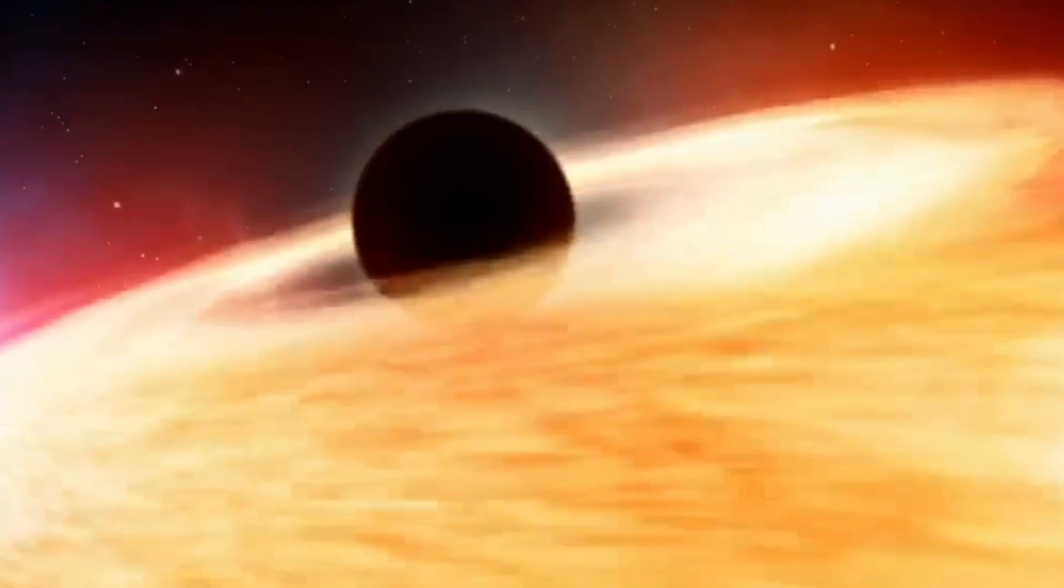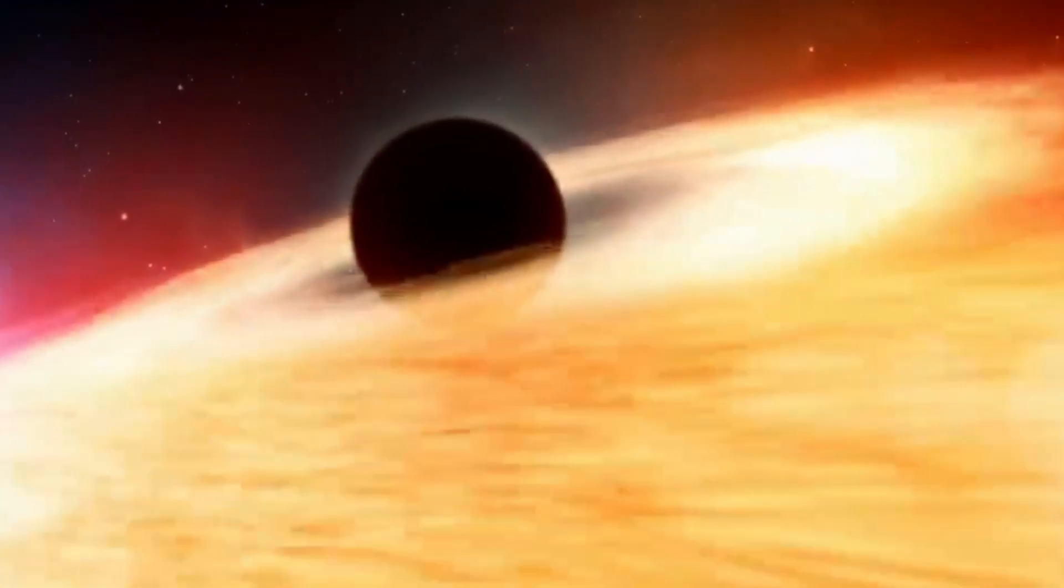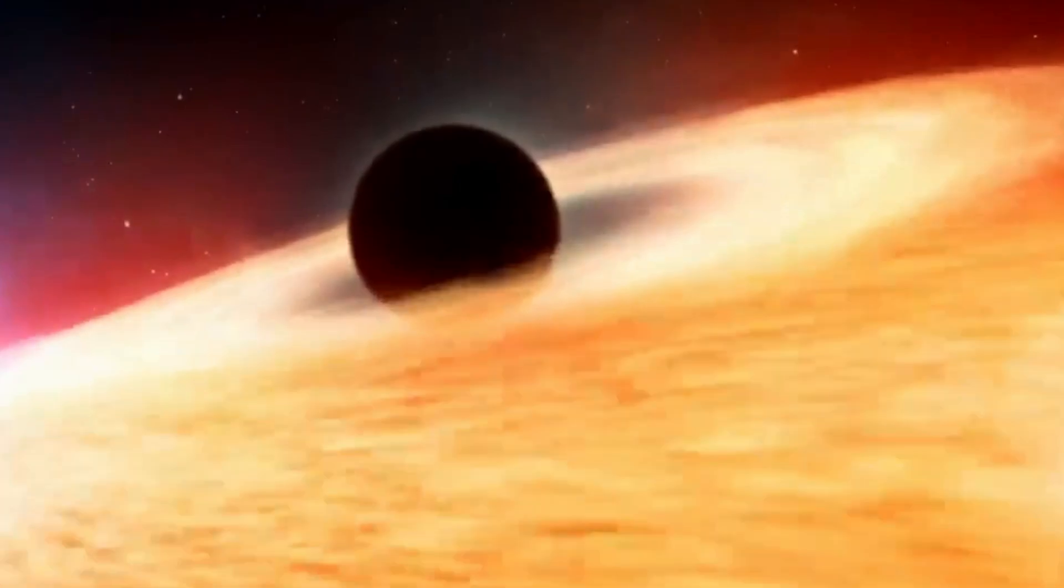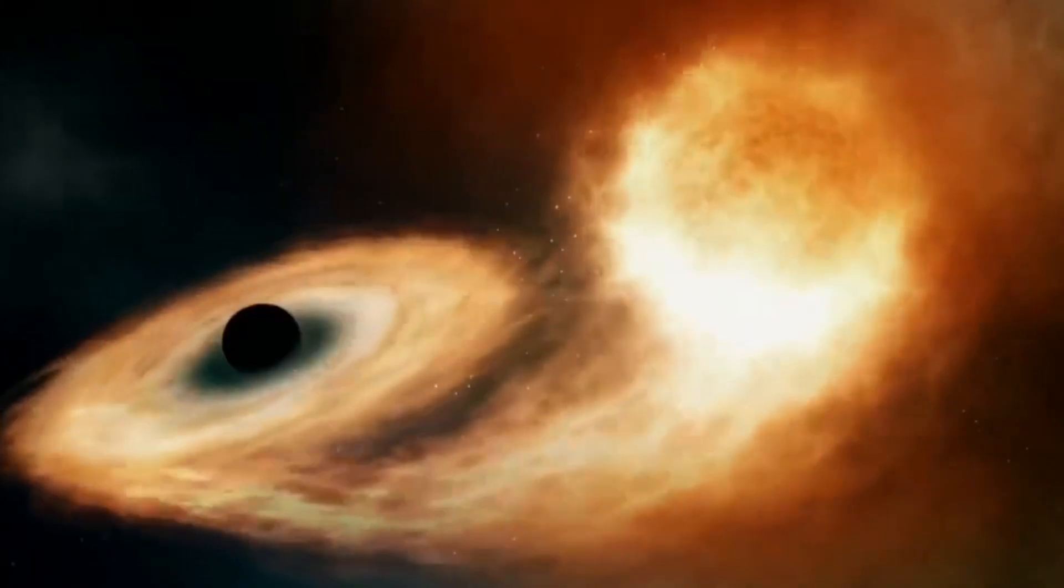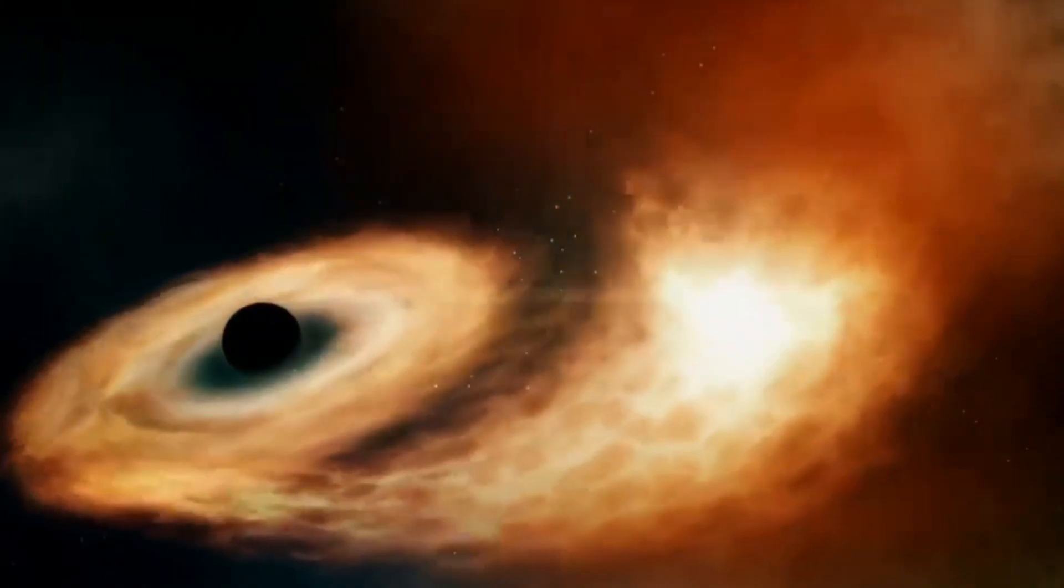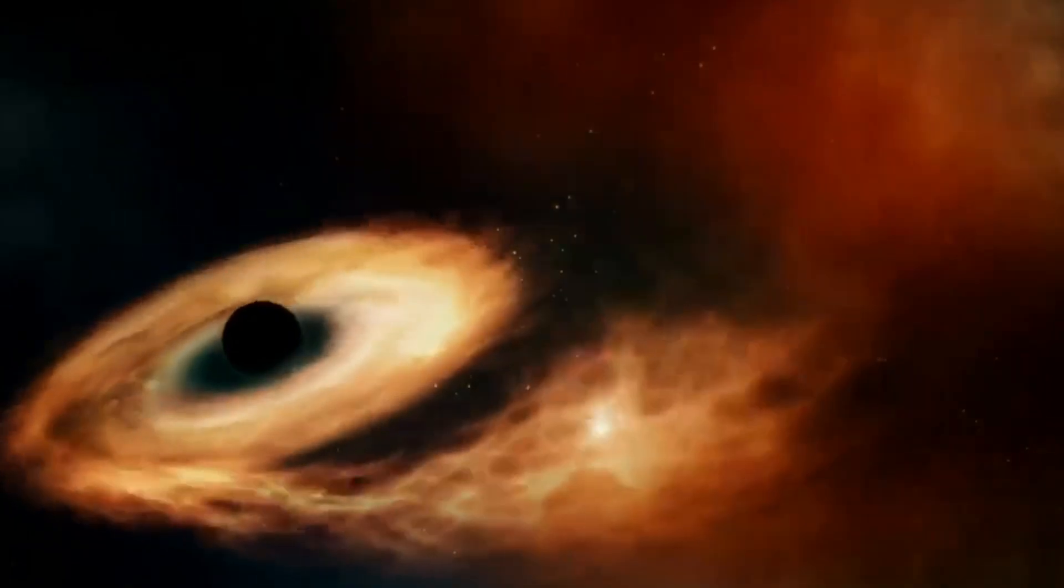It is believed that because these stars lose mass over time, they're left with more material that remains at the end of their lives. This surplus material can then result in the formation of high-mass black holes like Gaia BH3.